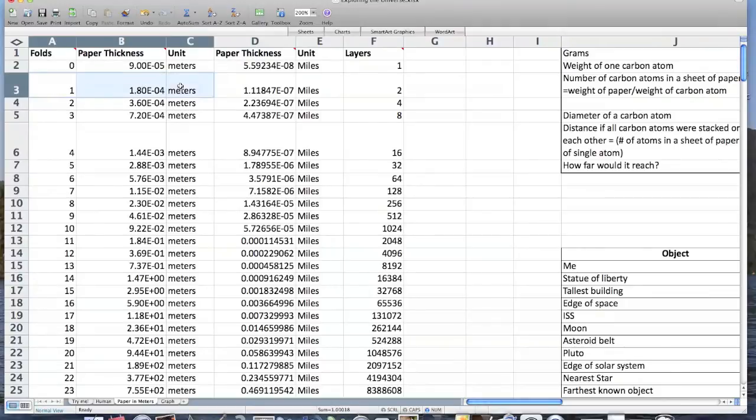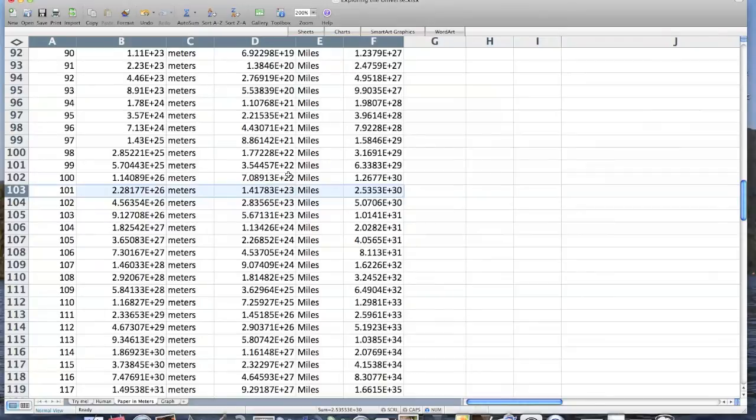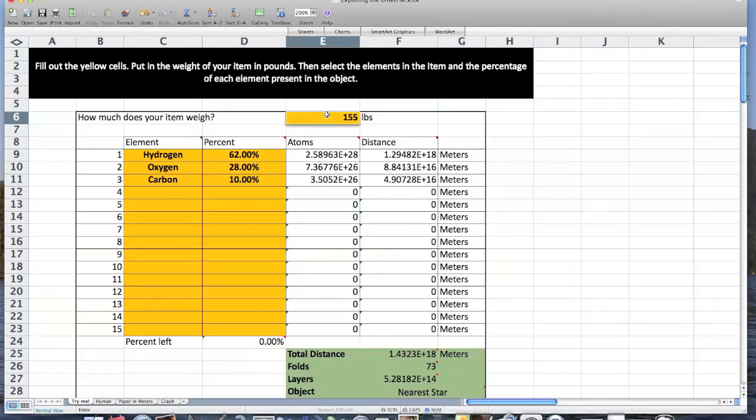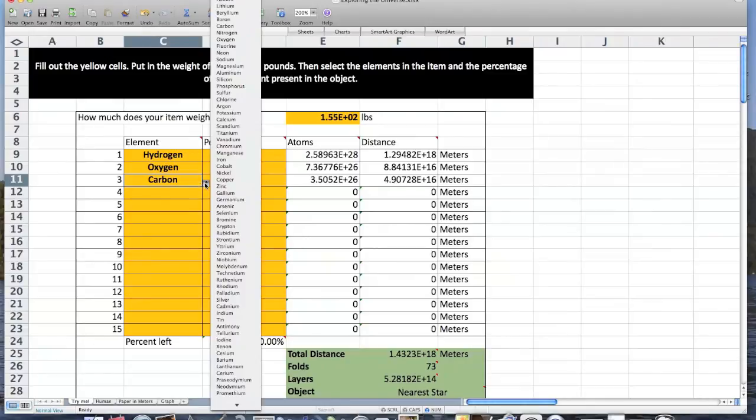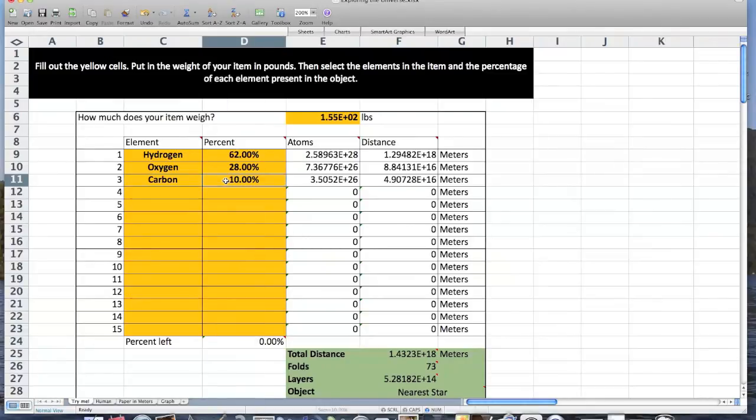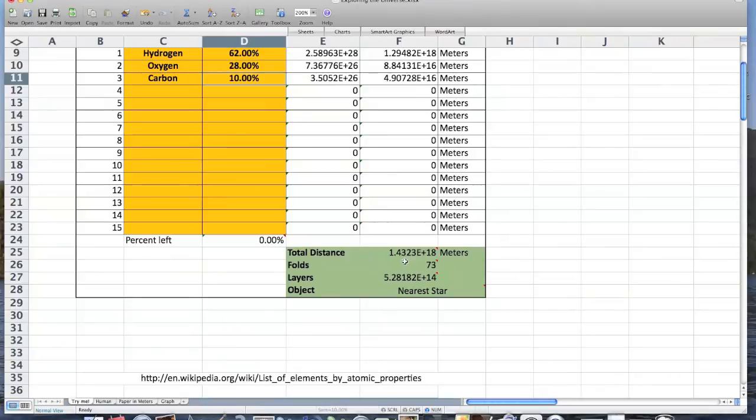If you want to play around with this some more and see how far the Harry Potter books can get you or if all the people in the world could stretch out to the farthest known object, which by the way we can reach in about 101 folds of a piece of paper, then you can download the excel link in the description. You choose the composition of an object and it will figure out the rest. Leave comments about anything really cool that you can figure out.